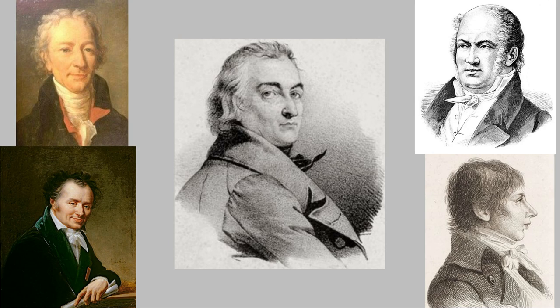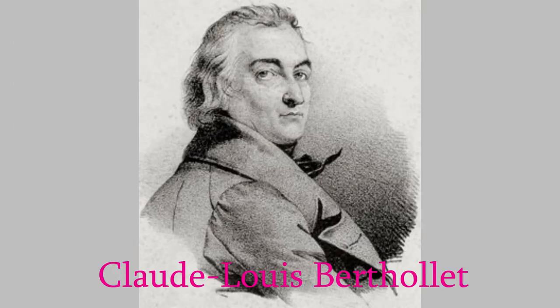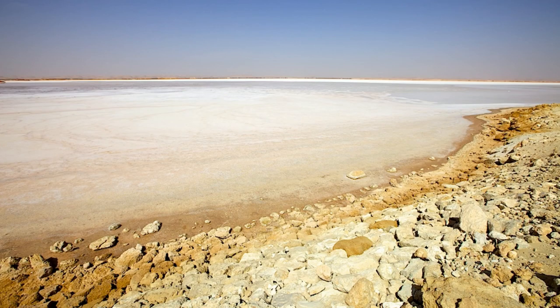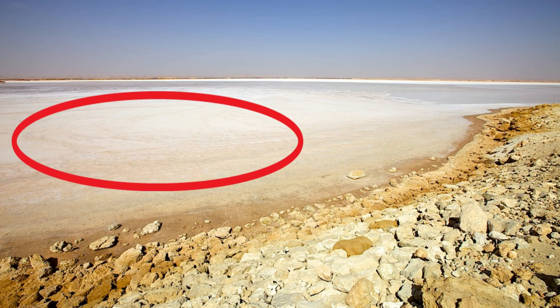The idea was that these people would explore the interior of Egypt, which Europeans didn't know very much about at the time. One of these was the chemist Claude-Louis Berthollet. He was especially interested in salt lakes that are deep in the deserts of Egypt, and in 1803 he paid several of them a visit along with Napoleon's entourage. Here's a photo of one — it's possible that this was one of the lakes that Berthollet himself visited. Berthollet found that there were deposits of sodium carbonate being produced along the shore.